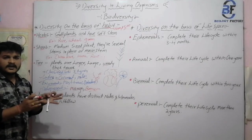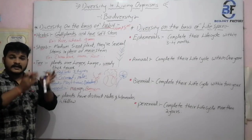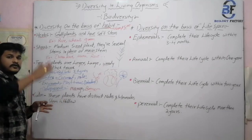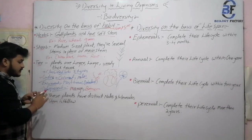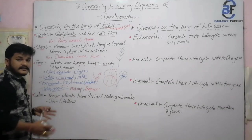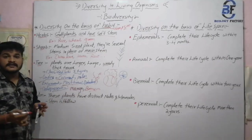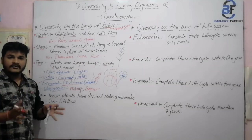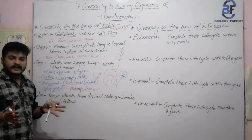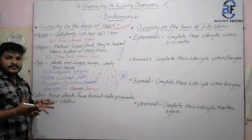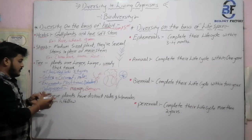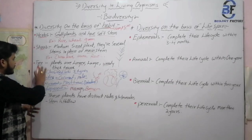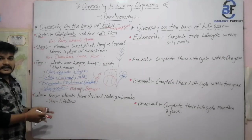In deliquescent, the woody tree trunk is again divided into a number of branches, and they are mostly woody and large. Mango and banyan are basic examples of deliquescent. So these are the basic types of tree and their classification.